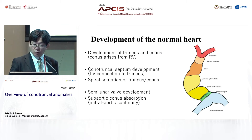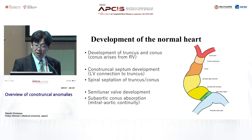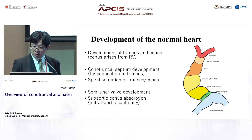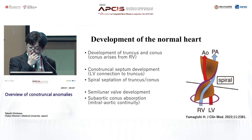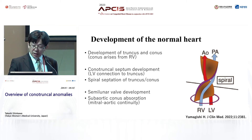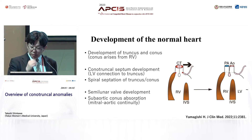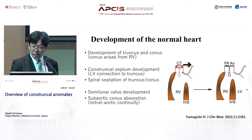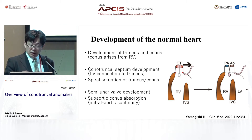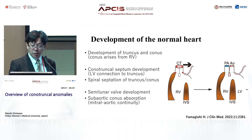As you can see in normal heart development, the truncus arteriosus and the conus arteriosus were developed at an early stage and the conus was connected to the primitive RV. The conus septum was developed and the spiral septation of truncus and conus was carried out. In this process the RV was connected to the posteriorly located pulmonary artery in the right outflow tract. Semilunar valves were developed and the sub-aortic conus was completely absorbed, which resulted in mitral-aortic continuity. Conotruncal anomalies contain heart disease with some anomaly in this process.